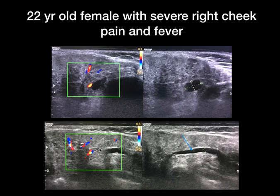On color Doppler, there is increased vascularity. Anterior to the parotid gland, you can see a dilated parotid duct which was more than 2 mm in size.